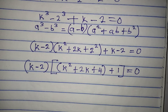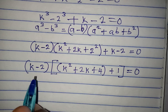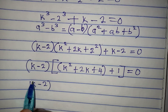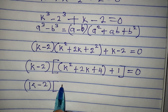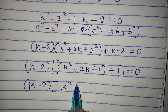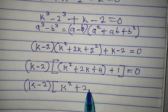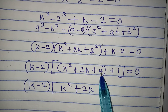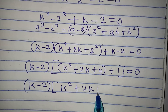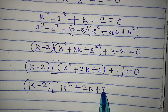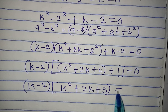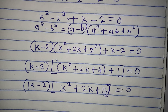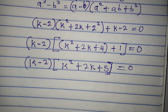Simplifying what is in the second bracket: k² plus 2k, and adding 4 plus 1 gives positive 5. So we have (k minus 2)(k² plus 2k plus 5) equals zero.